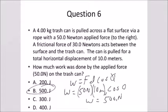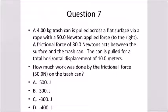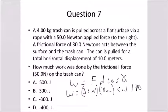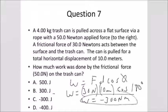Problem seven asks how much work was done by the frictional force. The frictional force acts in the opposite direction of the motion. Using work equals F times d times cosine theta: frictional force is 30 newtons, distance is 10 meters, and the angle between the displacement and the frictional force is 180 degrees. Cosine of 180 is negative one, so we end up with negative 300 newton-meters or joules.